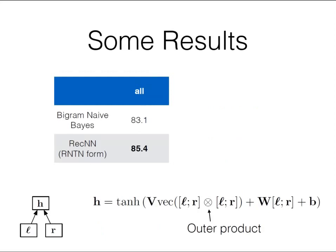Here are some results. A naive Bayes bigram model gets 83% accuracy, which is quite good compared to this fancy recursive model that gets 85.4%. And that wasn't even the basic model I presented — this is a fancier version where you take an outer product between the concatenation of child vectors, getting a big squared matrix, then multiply so you have multiplicative interactions between all components. If you set V to zero you recover the original model. So it's a more powerful model with many more parameters.